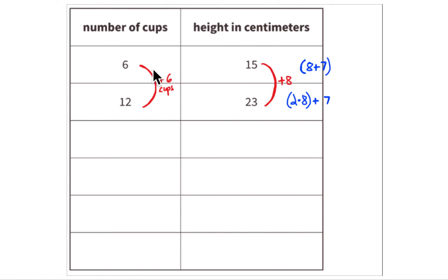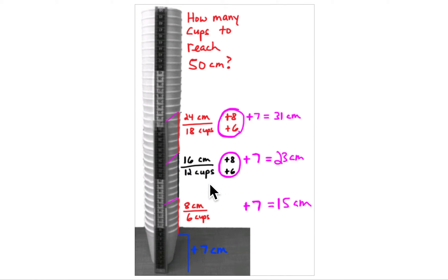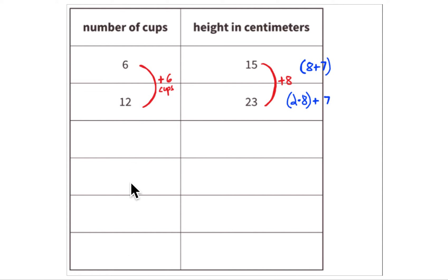Adding six more cups: two times six is 12 cups. Two groups of eight centimeters equals 16 centimeters of rims, plus the seven centimeters gives 23. The x-axis is the number of cups and the y-axis is the height. The number of cups increases by multiples of six — three times six, four times six, five times six — but the height always requires adding the seven centimeters.